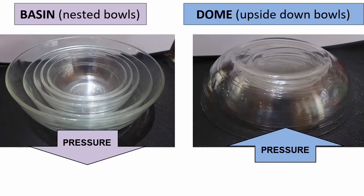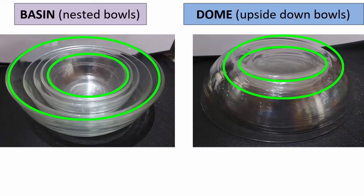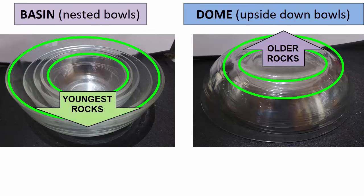However, in map view, after erosion, the outcrop pattern for both are concentric circles. Like with anticlines, in domes, the oldest rocks are pushed up in the center. While in basins, like synclines, the youngest rocks are preserved at the center.